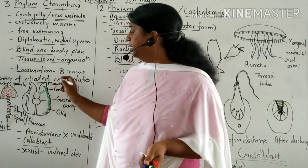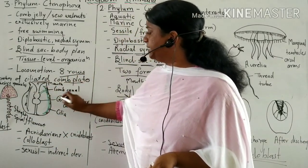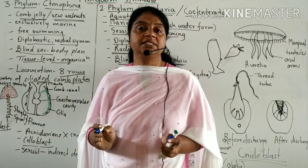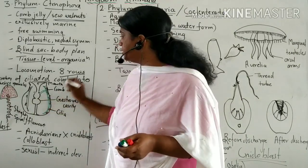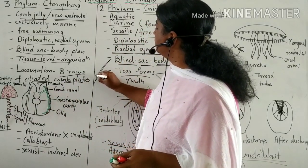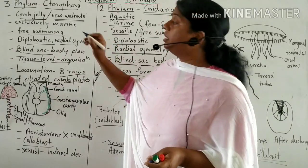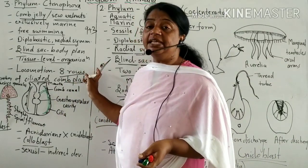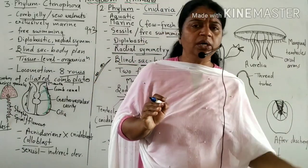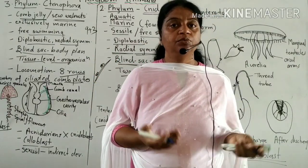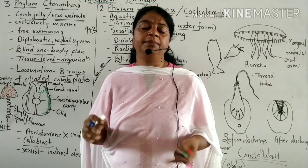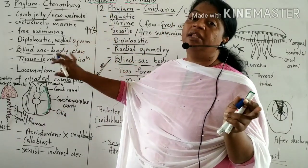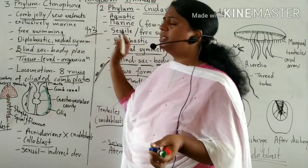Locomotion takes place using 8 rows of ciliated comb plates. These cilia are small hair-like structures arranged internally in a 9+2 arrangement. With the help of these cilia, the animal locomotes. Interestingly, lower unicellular animals like Paramecium also locomote with cilia, but Ctenophores are higher animals that also use cilia for locomotion with the same 9+2 arrangement.